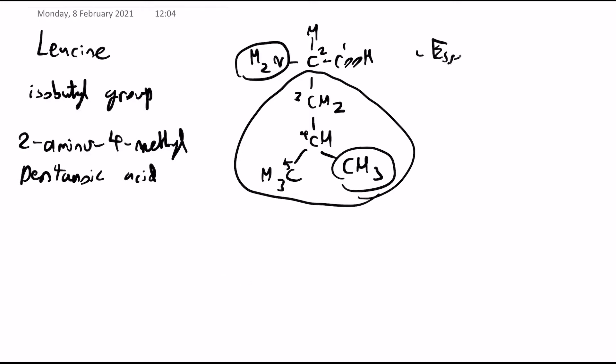So leucine is also an essential amino acid, so it has to be intaken as part of the diet. And leucine metabolism is quite important in the body, and this is because one of its products